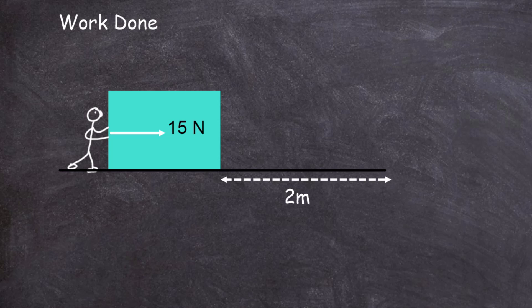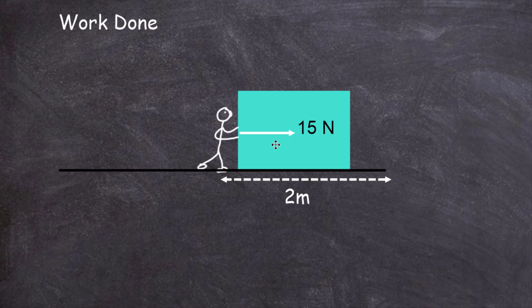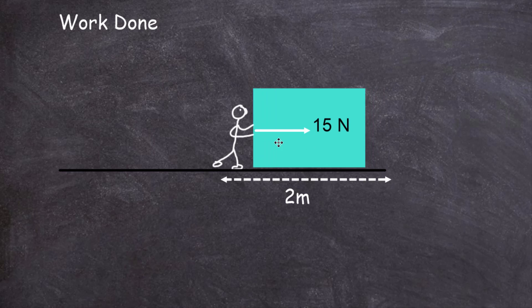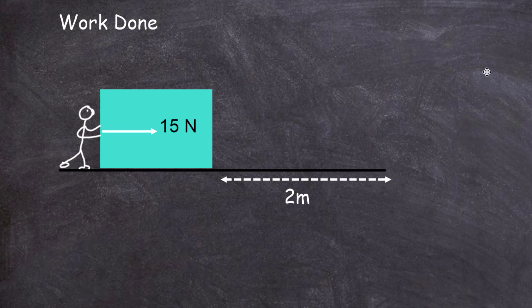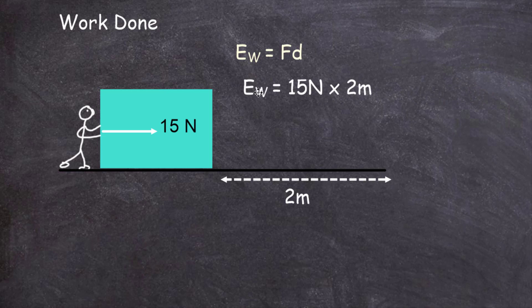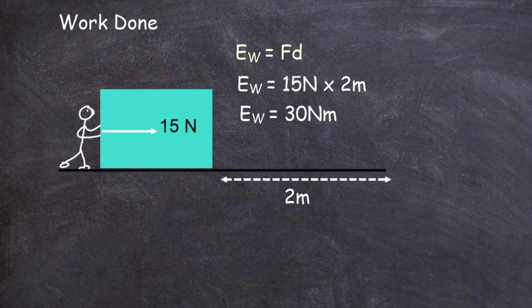Here's an example of someone pushing a block with a force of 50 newtons through a distance of 2 metres. We say that work has been done on the block by the force, and we can calculate the work done using the equation: work done equals force times distance. Putting in the numbers: the work done is 15 newtons times 2 metres, which comes out to be 30 newton metres. Since work done is a transfer of energy, that 30 newton metres equals 30 joules.